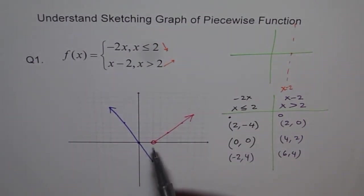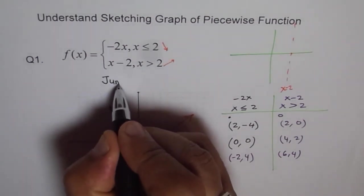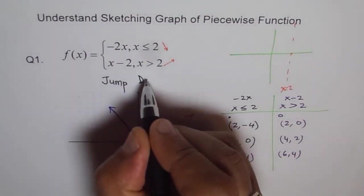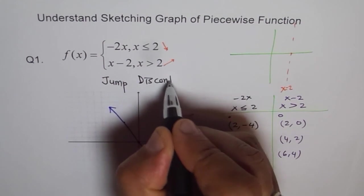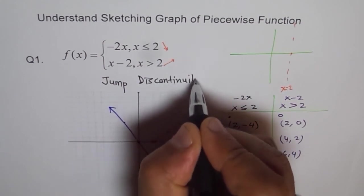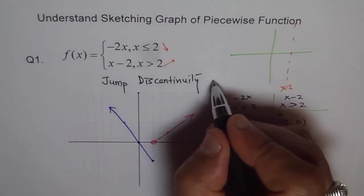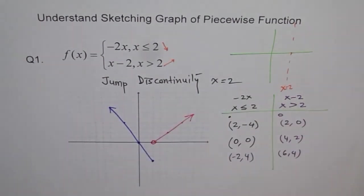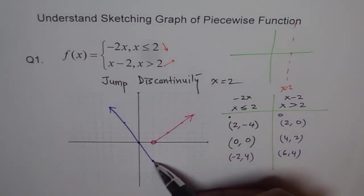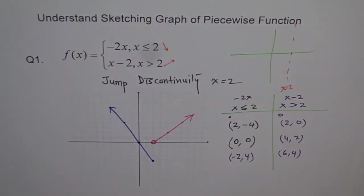They are discontinuous here. And what kind of discontinuity is this called? This is called jump discontinuity. So there is a jump discontinuity at x equals 2. You see that? Because they did not join together. If this hole falls over this point, then this function could have been continuous, which is not the case here. Thank you.